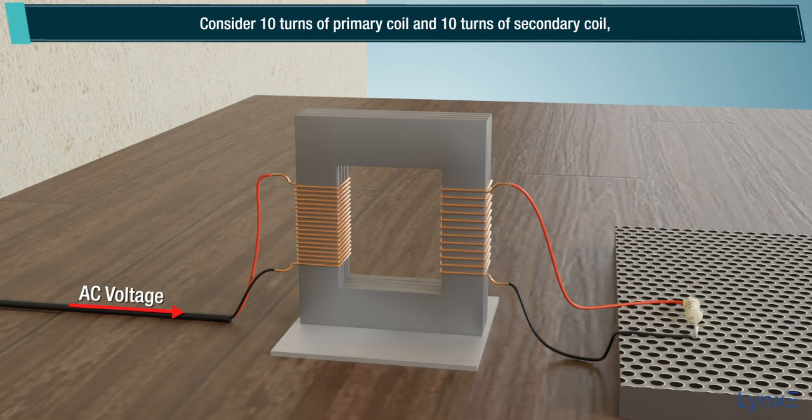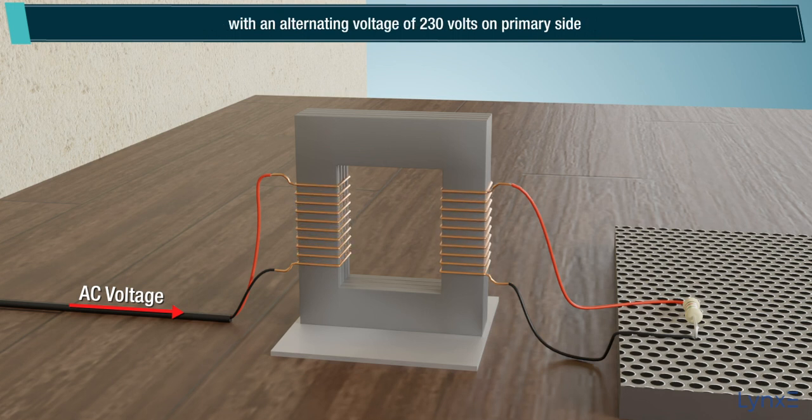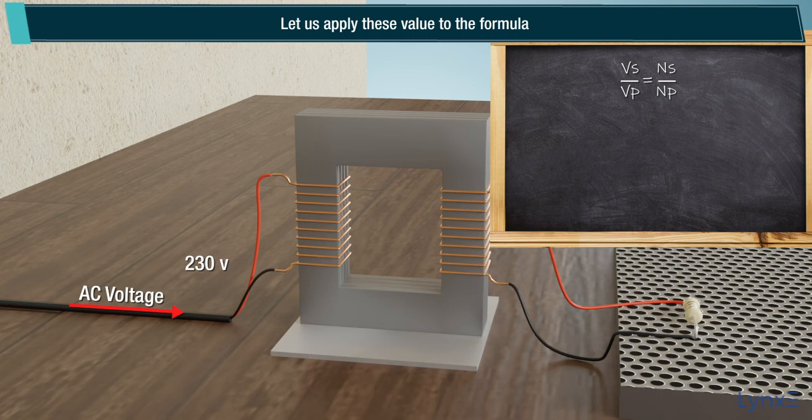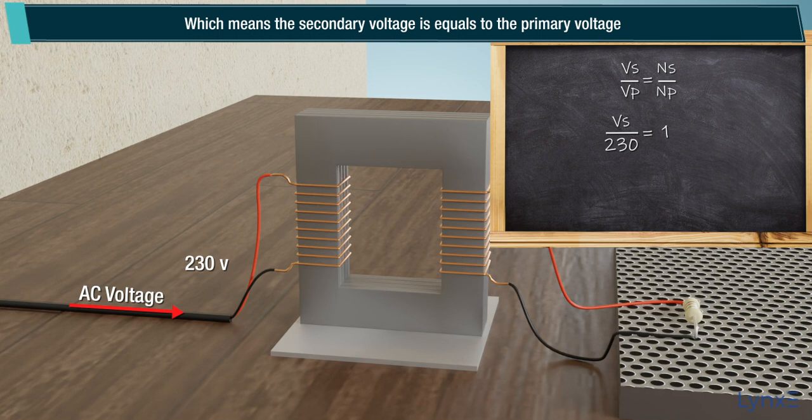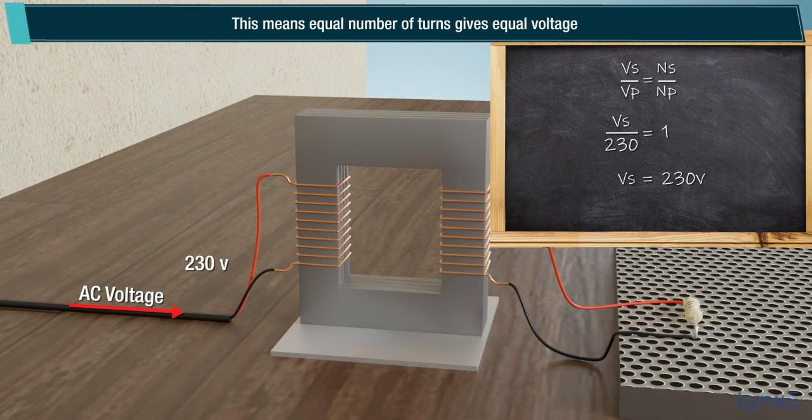Consider 10 turns of primary coil and 10 turns of secondary coil, with an alternating voltage of 230 volts on primary side. Let us supply these values to the formula. We will see the ratio of the secondary voltage to the primary voltage is 1, which means the secondary voltage equals the primary voltage. Therefore, Vs will be 230 volts. This means equal number of turns gives equal voltage.